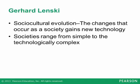Drawing on Lensky's work, we will examine five types of societies defined by their technology: hunting and gathering societies, horticultural and pastoral societies, agrarian societies, industrial societies, and post-industrial societies. Characteristics of each type are reviewed in the summing-up table on page 92.